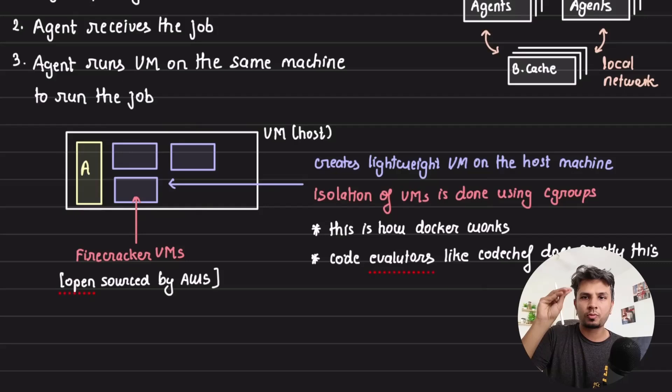You fire the code or whatever you want to execute in that, you execute in that, even if it crashes, it does not affect your entire host. That's why it's a very lightweight VM running on the host machine. And the isolation of these VMs is taken care using cgroups. And that is typically how your Docker works.